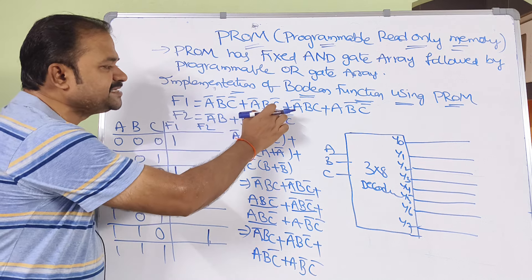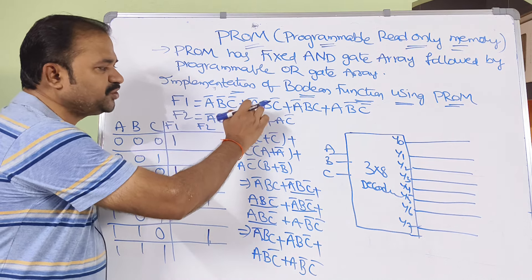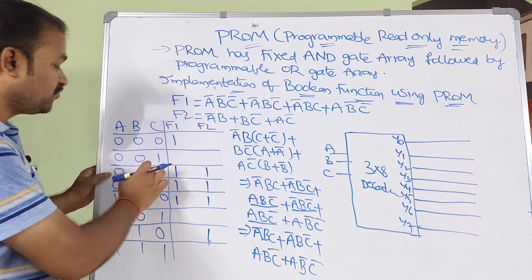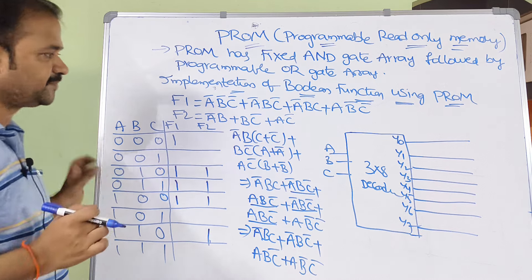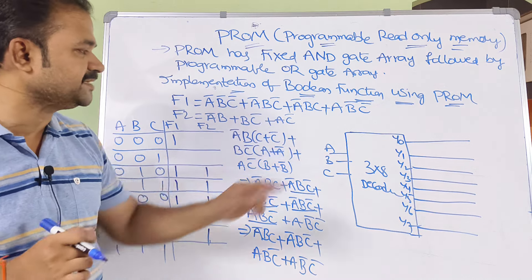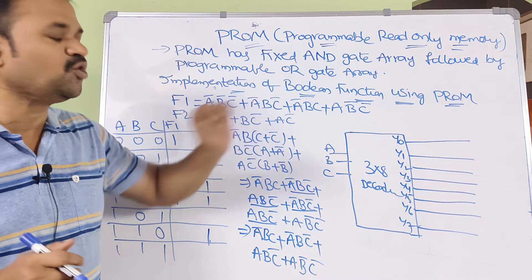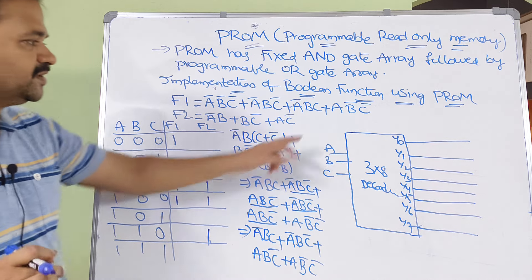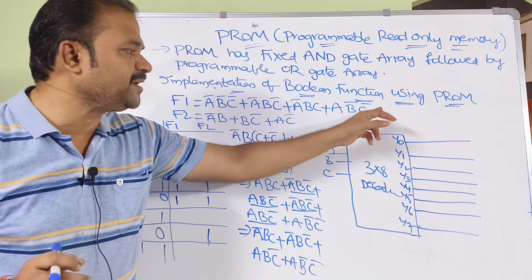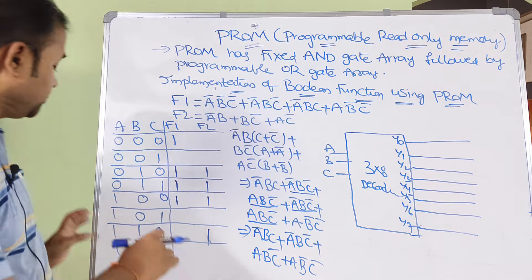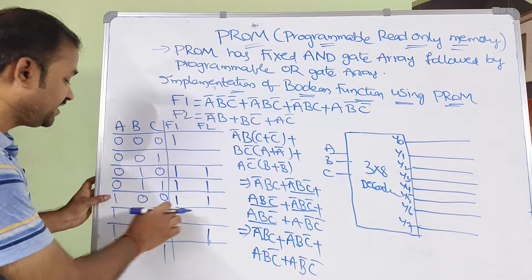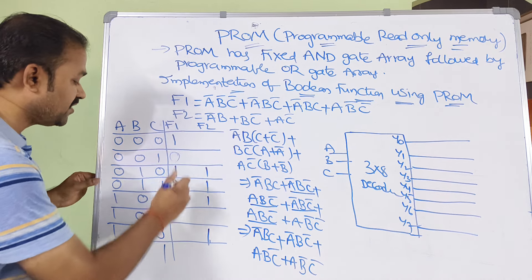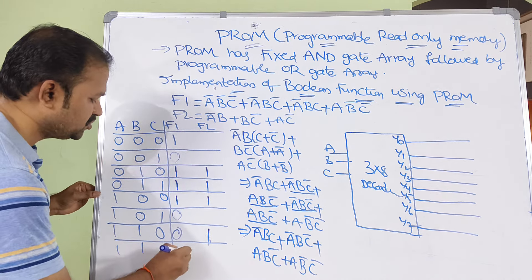Next, A bar, B bar, C means 0, 1, 0 — wait, that is 0, 0, 1 — so that's minterm 1, and F1=1. Next A bar, B, C means 0, 1, 1 — so we write 1 there. Next A, B bar, C bar means 1, 0, 0 — that gives minterm 4, so F1=1. For the remaining minterms, F1 value is 0.